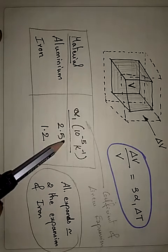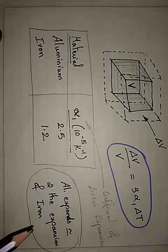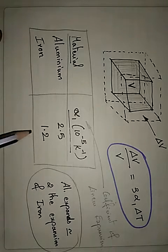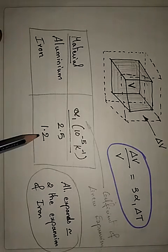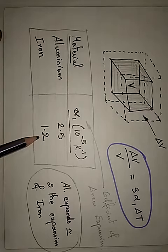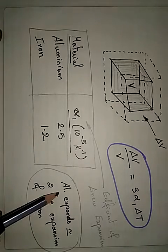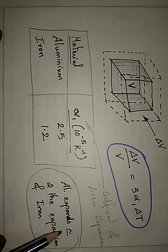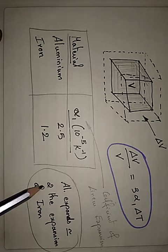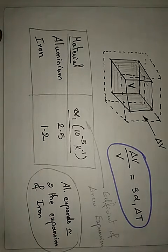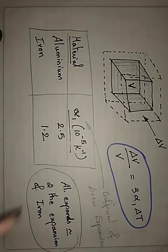If you just compare these two values, aluminum is roughly twice the value of iron. So, 1.2 into 2, roughly it is 2.4, which means that aluminum expands approximately twice the expansion of iron.